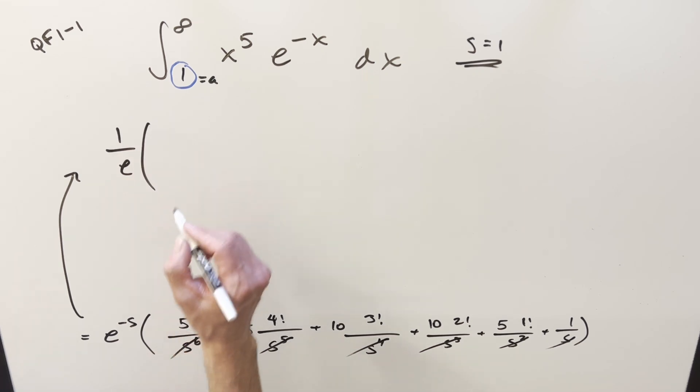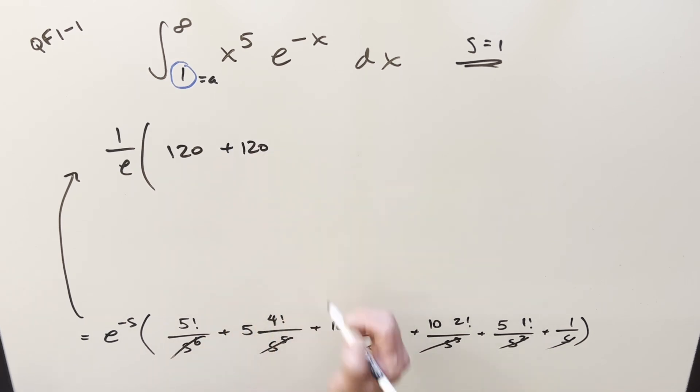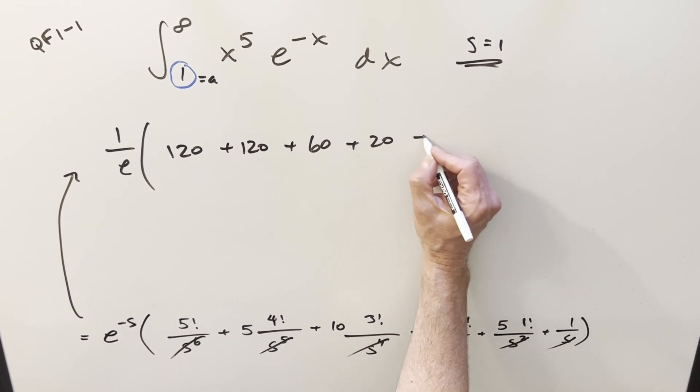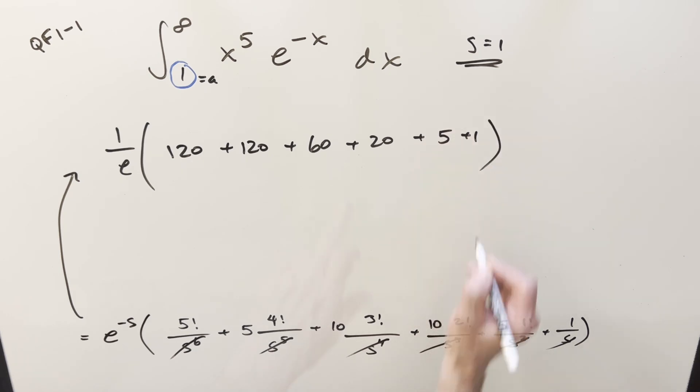And then here, 5 factorial, that's going to be 120. Then again, that's 5 factorial, so that's also 120. 10 times 3 factorial, 6 times 10, 60. 2 times 10, 20. Here, that's just a 5 plus 1. Add this all up, 240, 300, 326 over e.